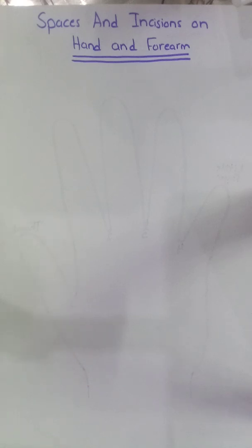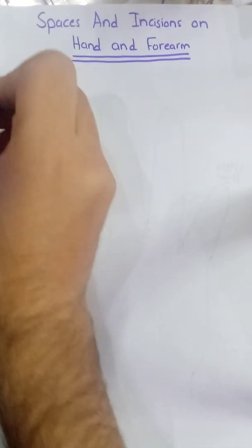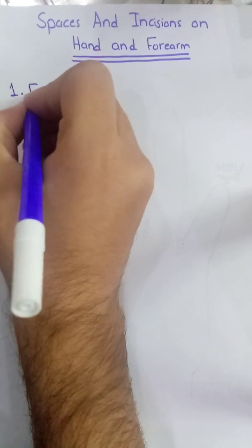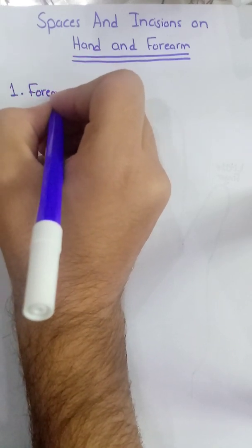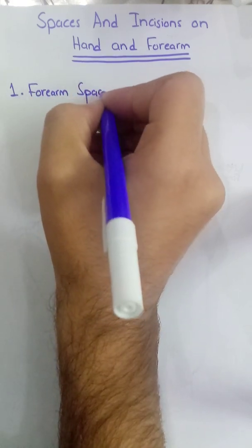Assalamu alaikum. Today we are going to discuss the spaces and the incisions on the hand and the forearm. We will discuss two spaces of the hand and one of the forearm. First we will discuss the forearm space of Parona, which is present in the forearm.